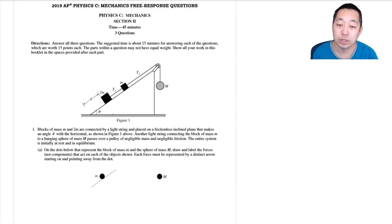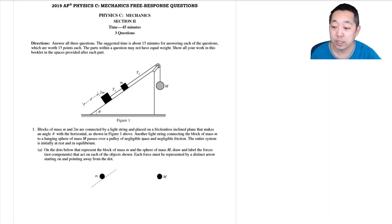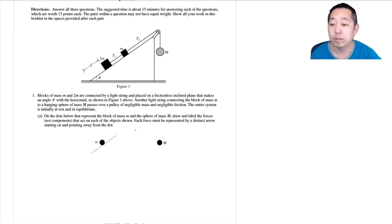Blocks of mass m and 2m are connected by a light string and placed on a frictionless inclined plane that makes an angle theta with respect to the horizontal. Another light string connecting the block of mass m is attached to a hanging sphere of mass big M over a pulley of negligible mass and friction. The entire system is initially at rest and in equilibrium. On the dots representing the block of mass little m and the sphere of mass M, draw and label the forces acting on each object, with each force starting from the dot.